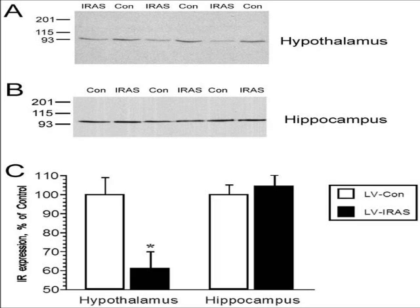However, for the rats that had lentivirus control injected into their hippocampus, there was just a slight increase in the insulin receptor expression percentage — increased to 104 on the graph. But as this is not a significant rise, we can say that the lentivirus control and the lentivirus insulin receptor antisense injected into the hippocampus expressed the same insulin receptor percentage control.